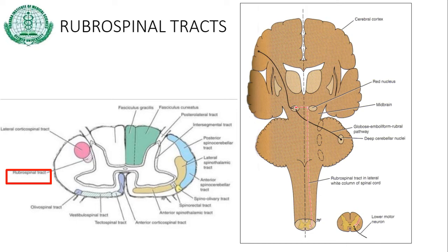All descending tracts — the rubrospinal, tectospinal, vestibulospinal, and olivospinal — other than the corticospinal are known as the extrapyramidal motor system. The corticospinal tract controls precise movements of the distal musculature, while the extrapyramidal tracts control gross postural movements.